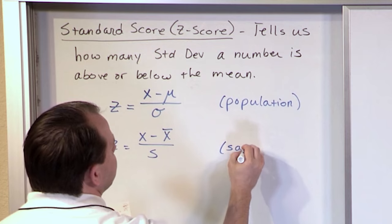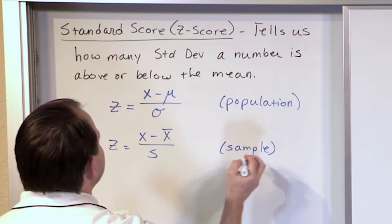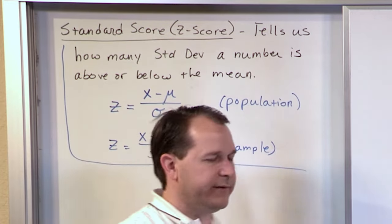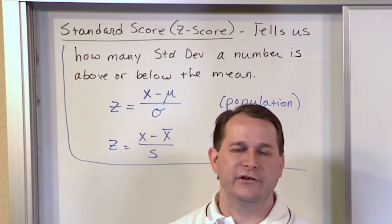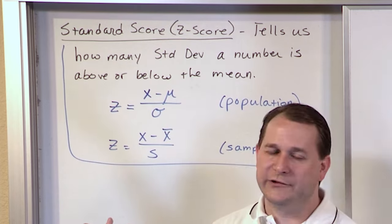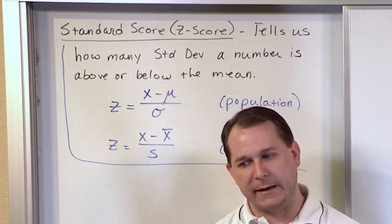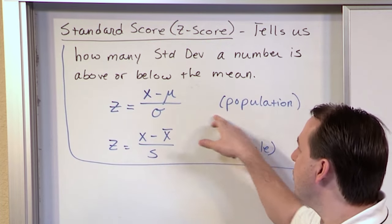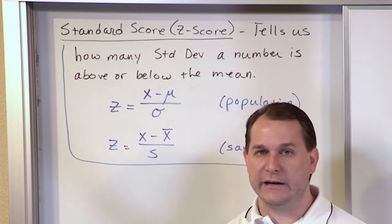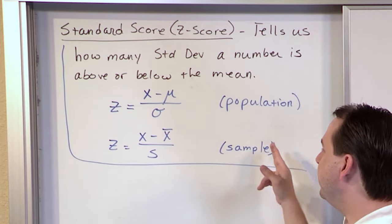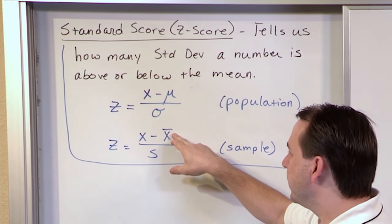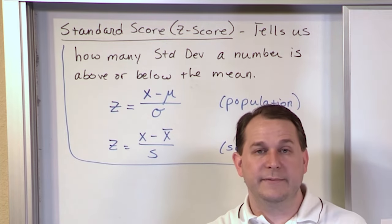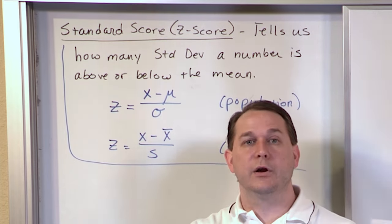Or you might see it written as the data value minus the average value, over the standard deviation S — and this is for a sample. This is why I spent so much time early on explaining what a population was versus a sample, because these are actually the same equation but with different variables. When you see mu and sigma, you're talking about the population. When you see x-bar and S, that's a subset or small sample of a larger population.